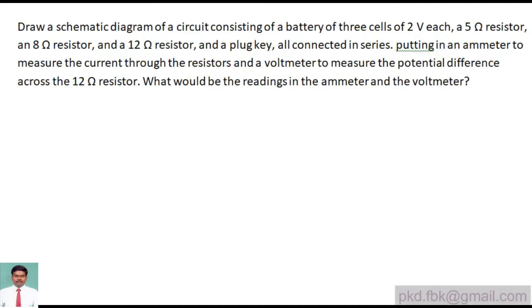Draw a schematic diagram of a circuit consisting of a battery of three cells, two volts each. Three cells connected in series - it becomes two plus two plus two, that's six volts. So the combination of three cells forms a battery, and the battery potential difference we are getting is six volts.